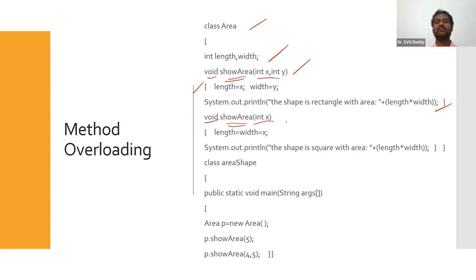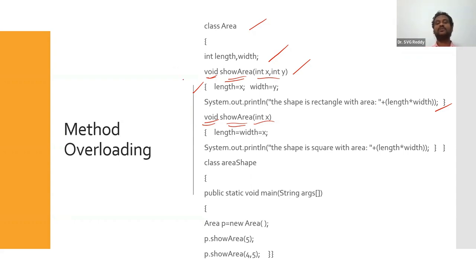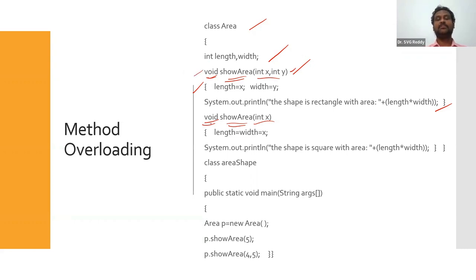showArea with two arguments and showArea with one argument, or showArea with int and showArea with float — different type of arguments, different number of arguments. The return type can differ — void or int — and access modifiers can be public or private. Java treats each as a separate method. If we have n number of methods with the same name but different number, type of arguments, different return type, and different access modifiers, those methods are treated separately by Java.